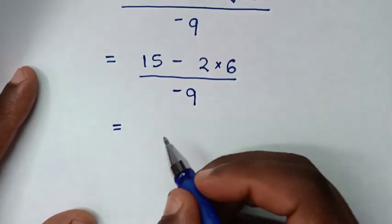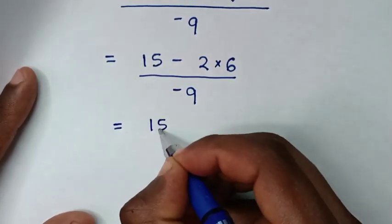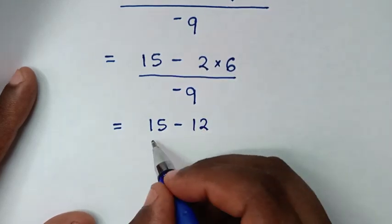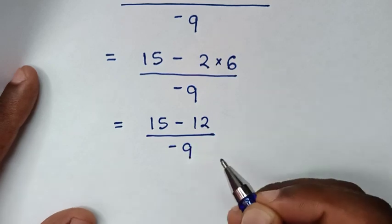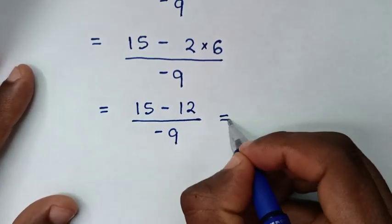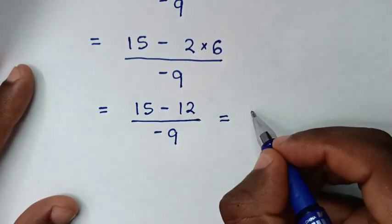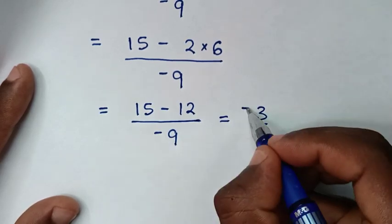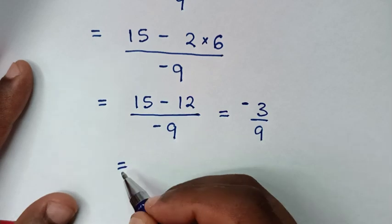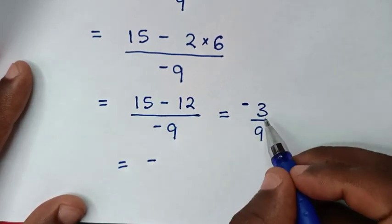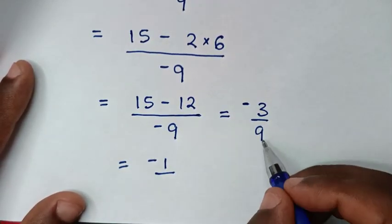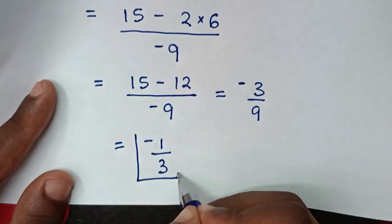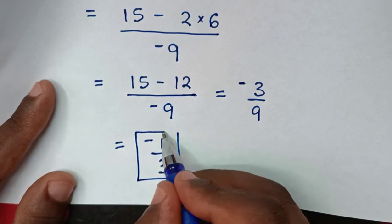This gives 15 minus 12, which is 3, over negative 9. To simplify: 3 divided by 3 is 1, and 9 divided by 3 is 3. So our final answer is negative 1 over 3.